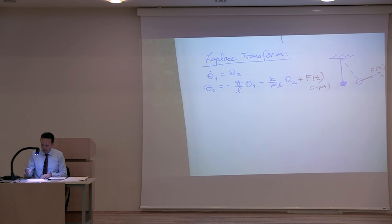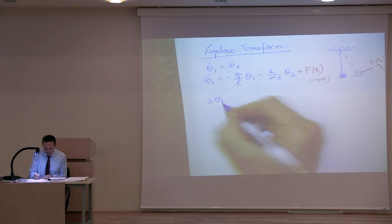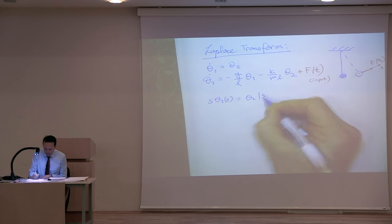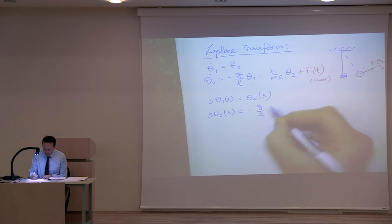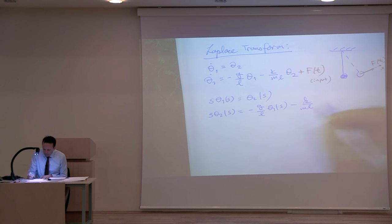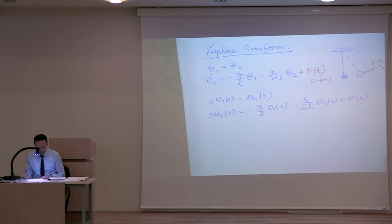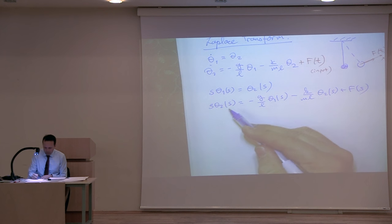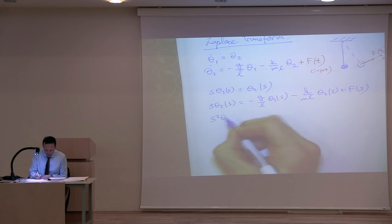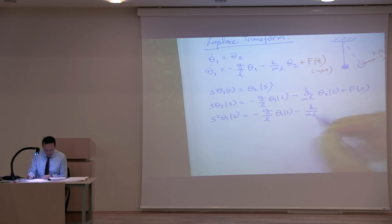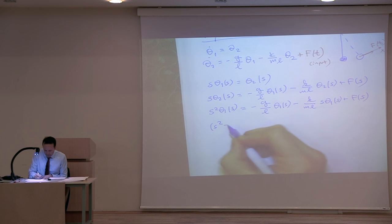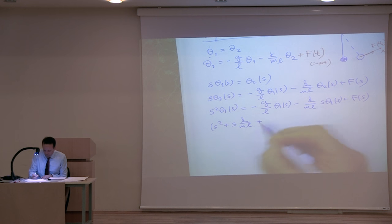Now I can look at the Laplace transform and the input versus output. Taking the Laplace transform: S*Θ₁(s) = Θ₂(s) for the first equation, and S*Θ₂(s) = −(G/L)*Θ₁(s) − (K/ML)*Θ₂(s) + F(s). Substituting the first into the second gives S²*Θ₁(s) = −(G/L)*Θ₁(s) − (K/ML)*S*Θ₁(s) + F(s).